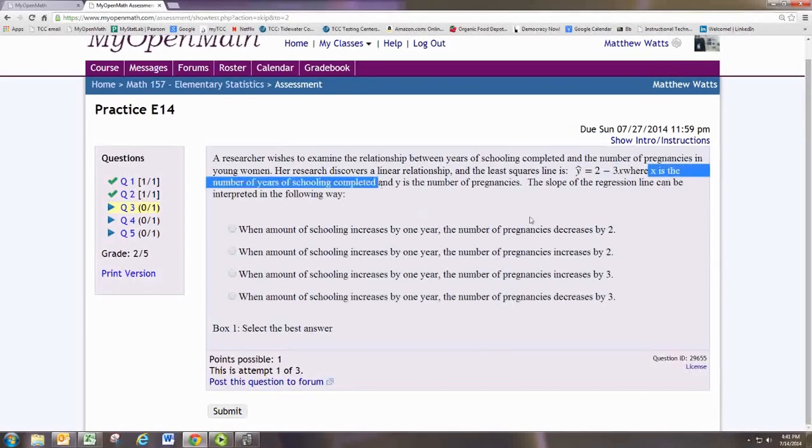Well, it says x is the number of years of schooling completed, so when the amount of schooling increases by one year, notice that all the answer choices start off that way. When you increase x by 1, then y should decrease by negative 3, and y is the number of pregnancies. So the number of pregnancies should decrease by 3. That's the last choice, is most appropriate.